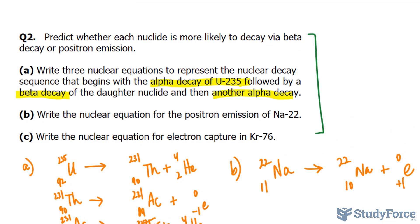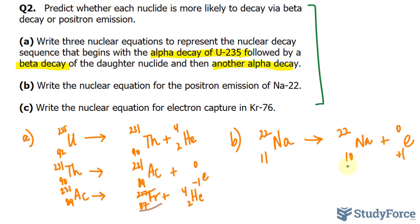Remember what the main question is asking: predict whether each nuclide is more likely to decay via beta decay or positron emission. The next one, C, write the nuclear equation of electron capture of krypton-76, and its atomic number is 36. In an electron capture, we are adding an electron to the atom. An electron here, negative 1, 0. This yields, if we want to balance this out, 35. Notice that the atomic number decreases in an electron capture. The 35th element is bromine, and the mass stays the way it is.